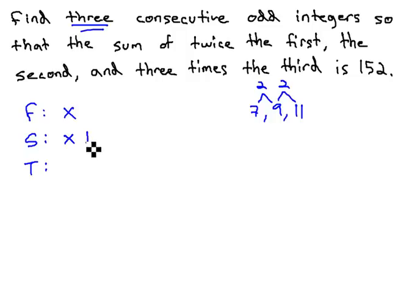This means to get to the next odd integer, we have to add 2, and the next one, add 2 more, or a total of 4. Then we add 6, 8, and 10, depending on how many numbers we're working with.